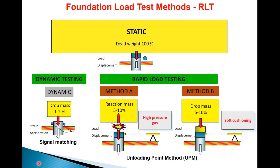This slide is a good way to visualize the different types of load testing. At the top is a static load test — all these tests use mass, and in a static load test we use mass under the acceleration of gravity to produce a static load. In contrast, dynamic testing uses a much smaller mass — on the order of one to two percent of the static test mass — dropped to impact the foundation. Because of the very fast accelerations, you can produce the same peak force with only one to two percent of the mass.